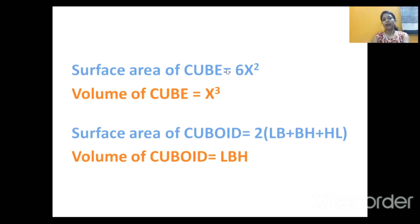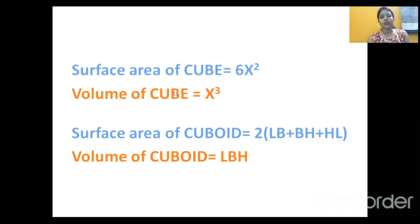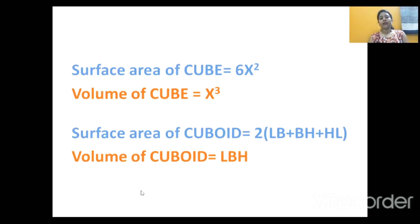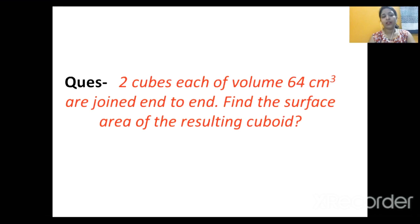For a cube: surface area is equal to 6x², where x is the edge of the cube — and in a cube all edges are equal. Volume of cube is equal to x³. For a cuboid: surface area is equal to 2(lb + bh + hl), where l is length, b is breadth, and h is height. Volume of cuboid is equal to l×b×h.